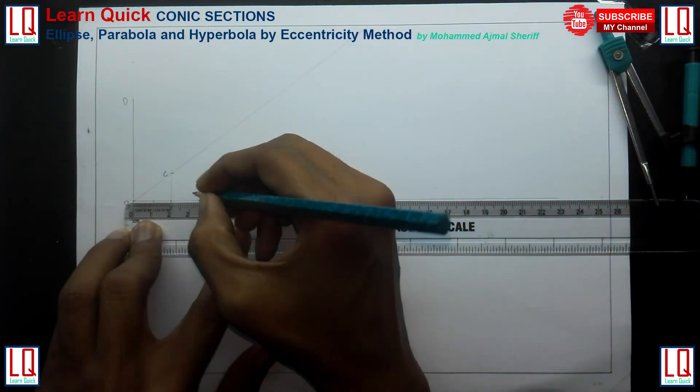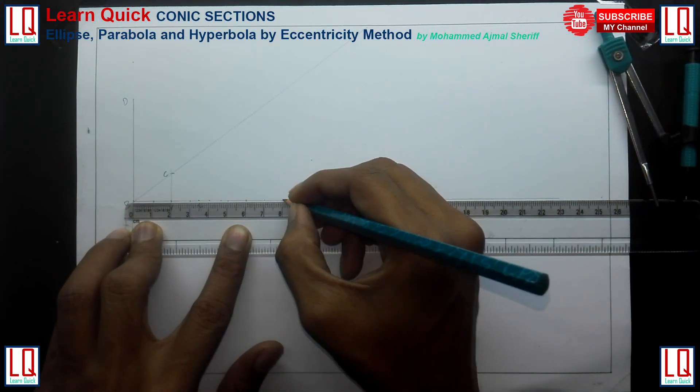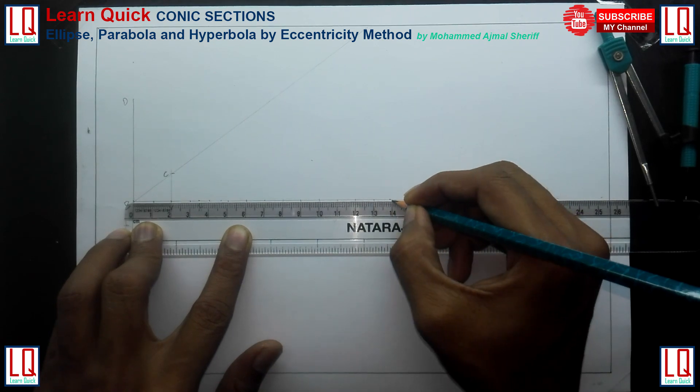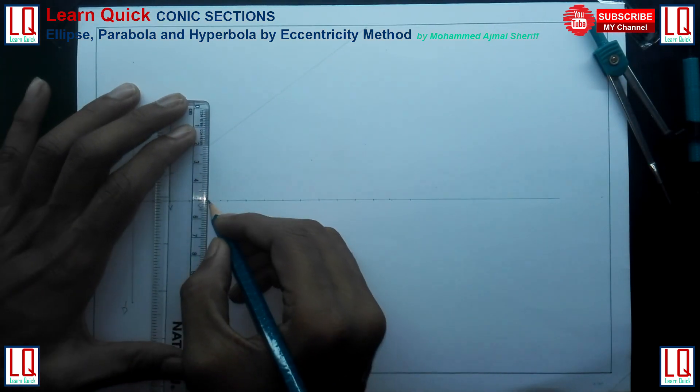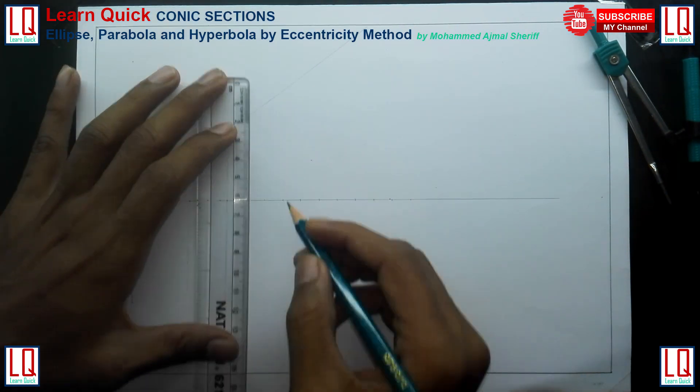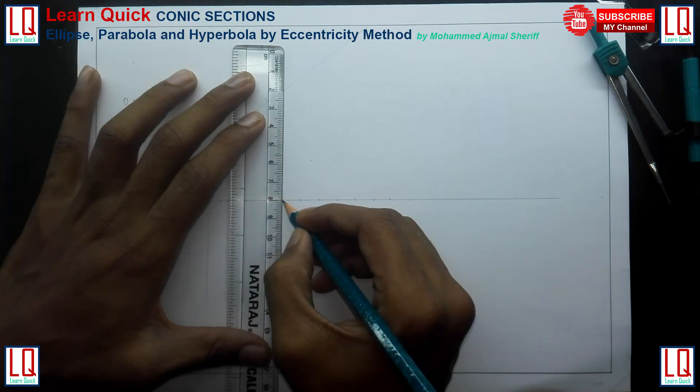Now draw vertical lines at arbitrary points, say for the distance of 10 mm, meeting the extended line BC. Name the vertical lines 1, 1 dash, 2, 2 dash, and so on.